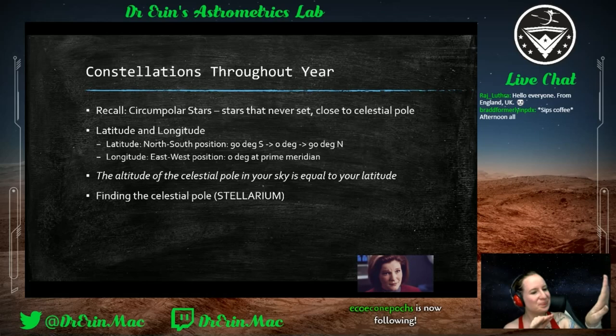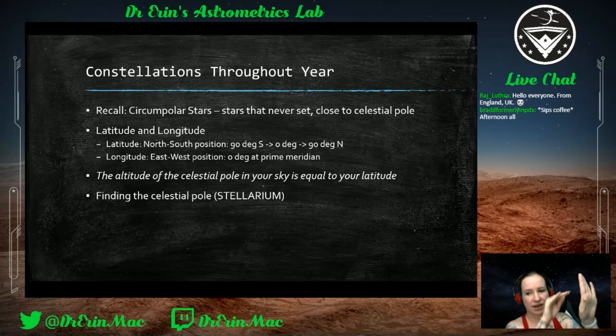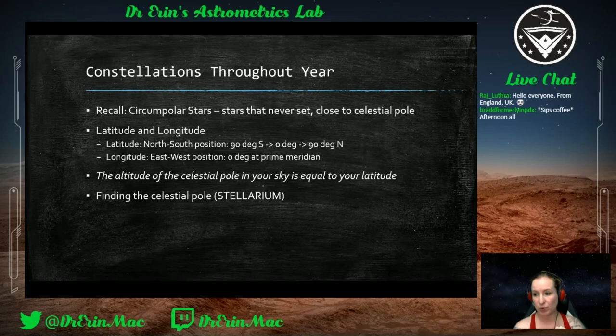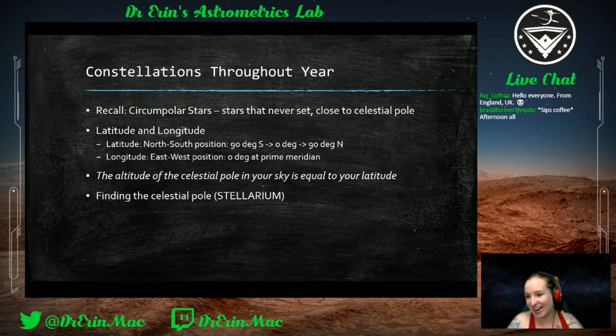The further up you go on the earth, the celestial pole will start to rise in the night sky. At 10 degrees latitude, the celestial pole is 10 degrees higher in the sky. At 90 degrees north it's directly above you — at your zenith. When it comes to navigating by the stars, it's easy to figure out your latitude if you can find Polaris and measure how high it is.